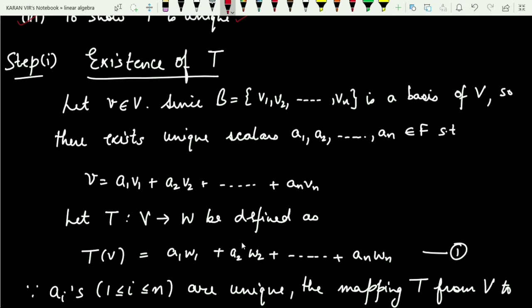In the first step we need to prove the existence of T. I have considered any vector from V. We know the basis of V is {v1, v2, ..., vn}. There exist unique scalars a1, a2, ..., an from the field such that any vector v can be represented as a linear combination of the basis elements: v = a1*v1 + a2*v2 + ... + an*vn.